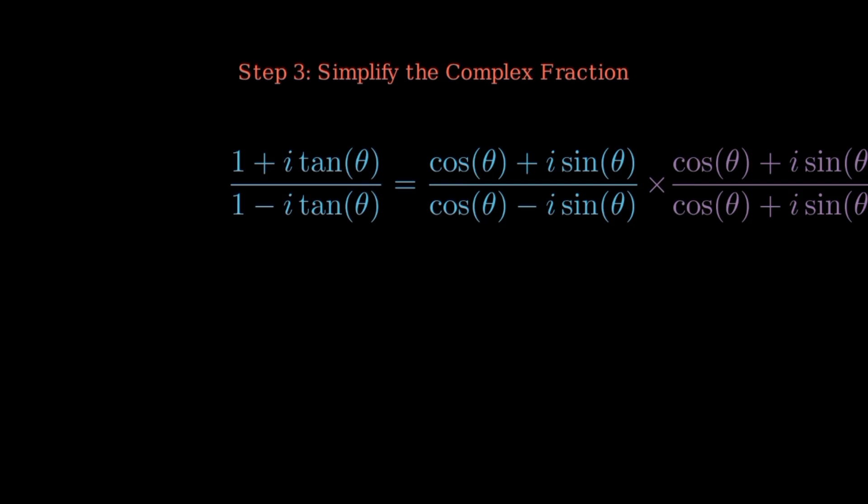To simplify, multiply numerator and denominator by the conjugate of the denominator. That gives us cosine theta plus i sine theta squared over cosine squared theta plus sine squared theta. But cosine squared plus sine squared equals 1. So the denominator disappears. We're left with just cosine theta plus i sine theta all squared.